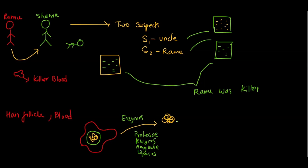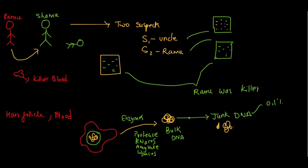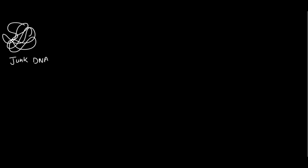After isolating the DNA, we don't need all of it — we only need the junk DNA. Junk DNA is that 0.1% of DNA which is very unique to a person. From this bulk DNA, to isolate the junk DNA, we perform centrifugation of the extracted DNA in a cesium chloride solution — cesium chloride-dependent centrifugation. The junk DNA we obtain contains VNTRs.